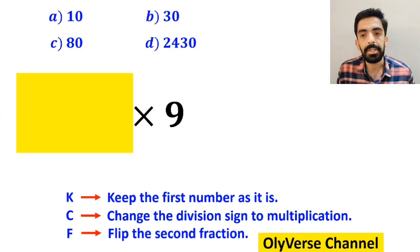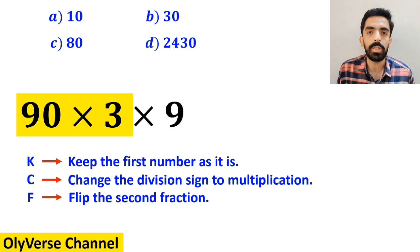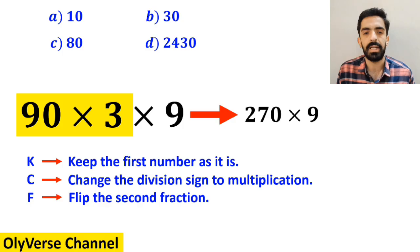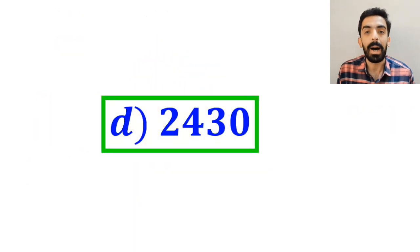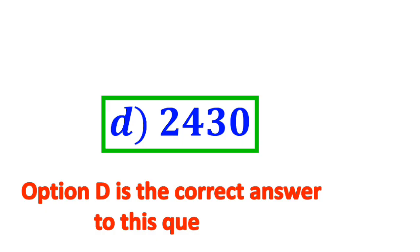So we remove the highlighted part and replace it with 90 multiplied by 3. Now this expression simplifies to 270 times 9, which finally gives us the answer 2430. Therefore, option D is the correct answer.